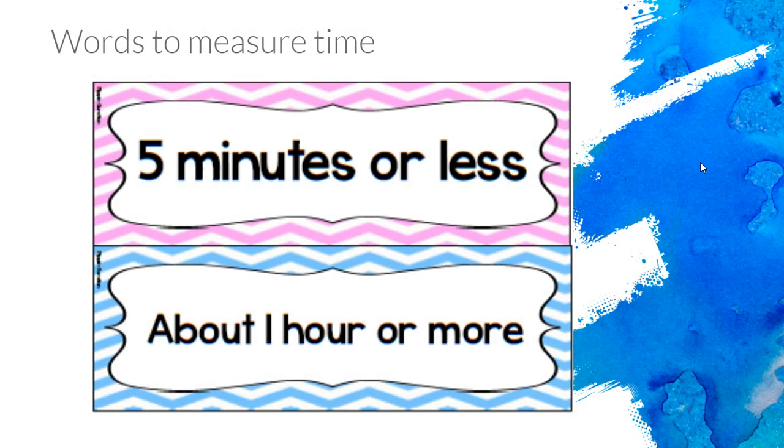And we're going to think about five minutes or less, or about one hour or more. So if I say five minutes or less, how would you describe that amount of time? You would say that is a short amount of time. And about an hour or more, one hour or more, that is a long amount of time. So shorter or longer in terms of time.